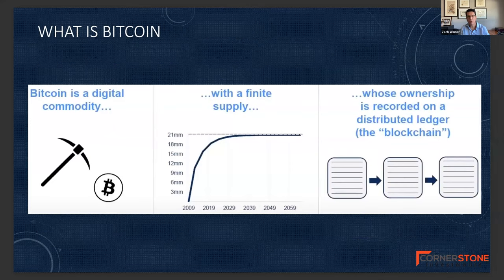Let's start with a definition of what Bitcoin is. It's a digital commodity. A lot of people refer to Bitcoin as digital gold, and it's got a very finite supply. There will only be 21 million Bitcoin ever produced, and already over 90% of them have been produced or mined. That's the way they're produced — they're mined.